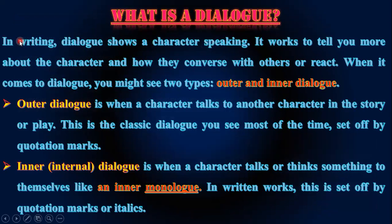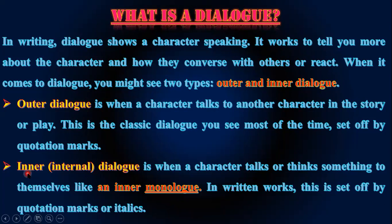In writing, dialogue shows a character speaking. It works to tell you more about the character and how they converse with others or react. When it comes to dialogue, you might see two types: outer and inner dialogue. Outer dialogue is when a character talks to another character in the story or play — this is the classic form, most of the time set off by quotation marks. Inner or internal dialogue is when a character talks or thinks to themselves, like an inner monologue, set off by quotation marks or italics.